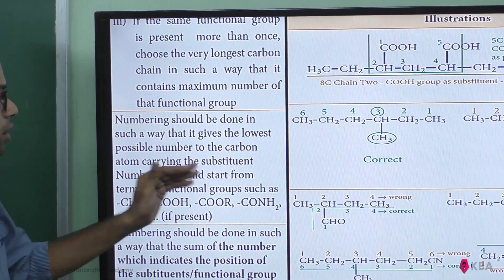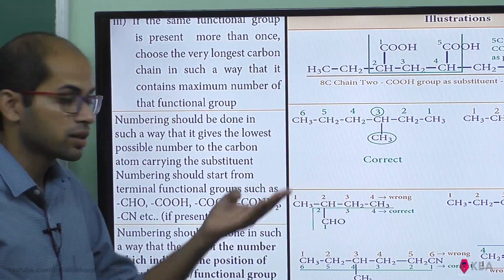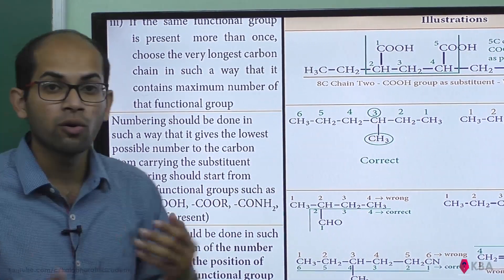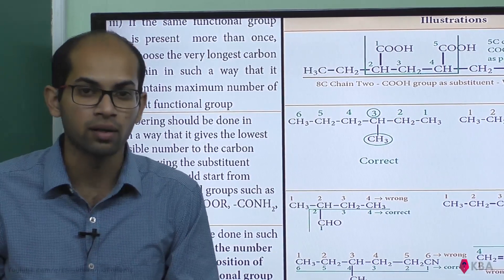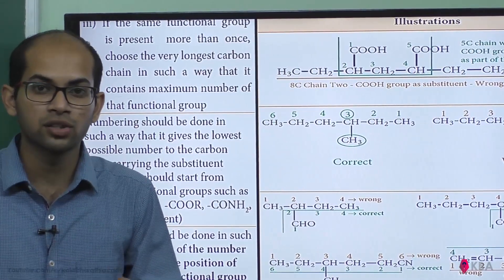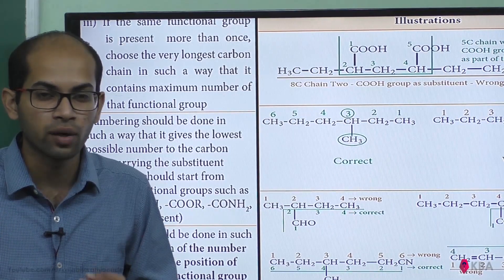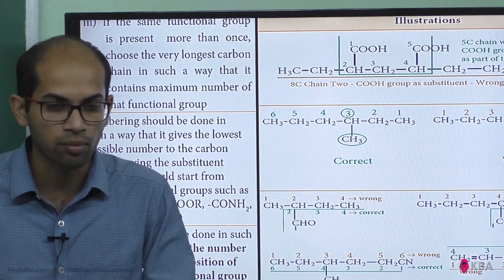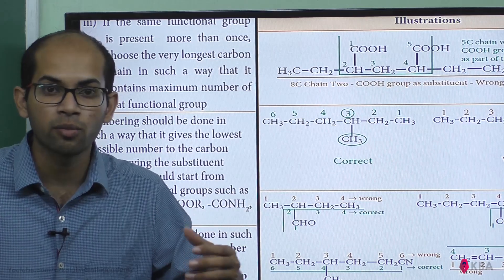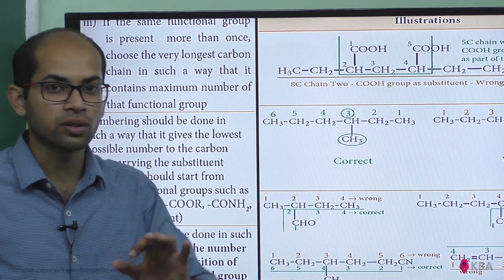If a terminal functional group is not present, that is the first preference — the functional group gets the lowest number. If there is no functional group, then give the substituent the lowest number. That is the substituent lowest number rule.